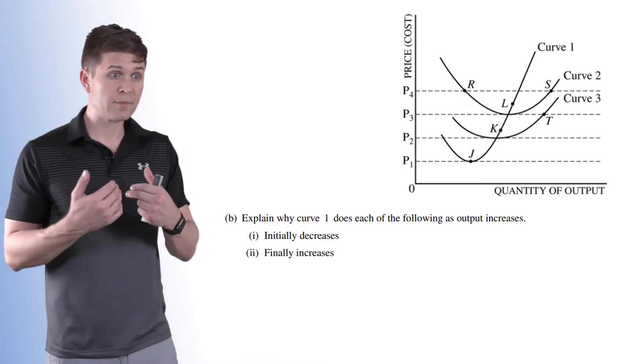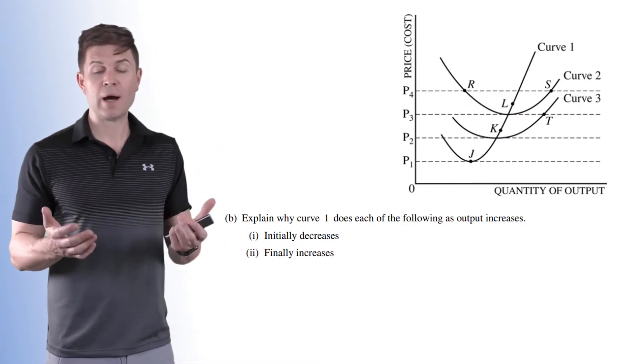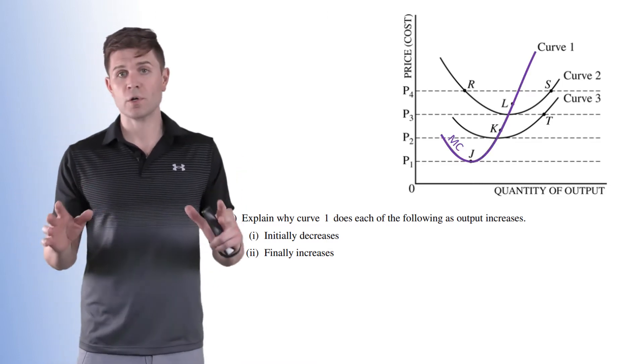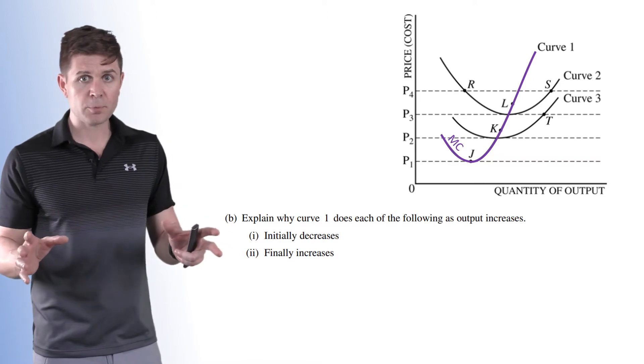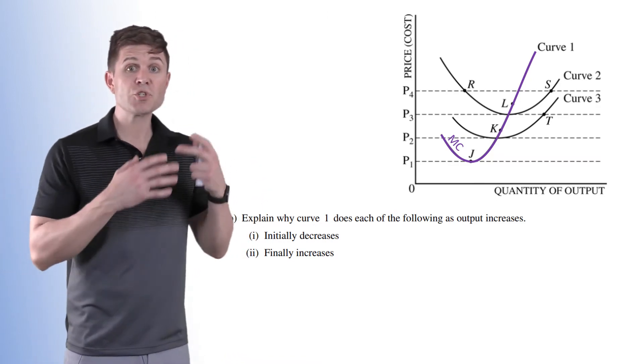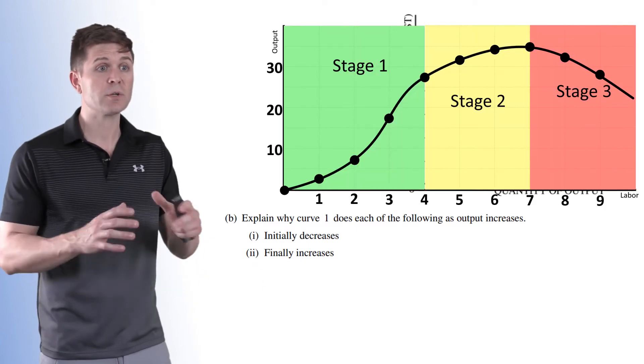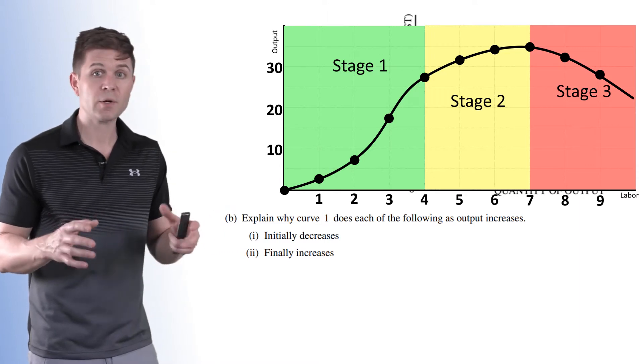Part B says explain why curve one does each of the following as output increases. We know that curve one is our marginal cost curve. Now this is a fairly easy answer to put down on paper, but I want to explain a little more so you fully understand it. And then we're going to jump over to the production function to kind of explain it a little better.